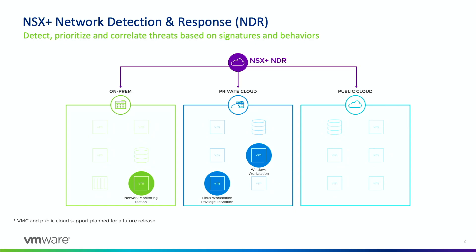With NDR, we also take signals from malware — malicious files being transferred across the network. We identify files as being benign, suspicious, or malicious, and we can correlate these file events with IDPS events and NTA events. That's the main premise of NSX Plus NDR.